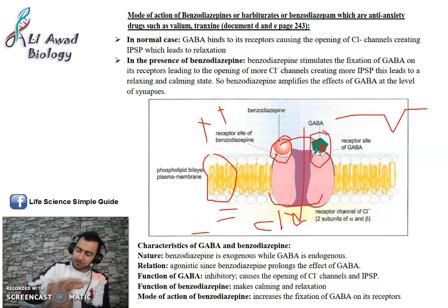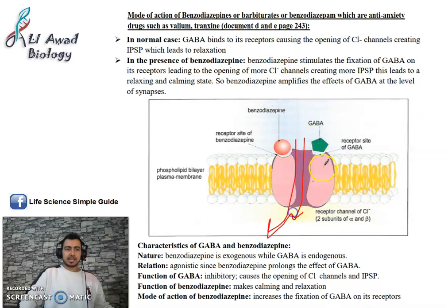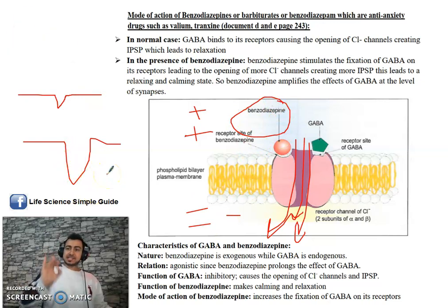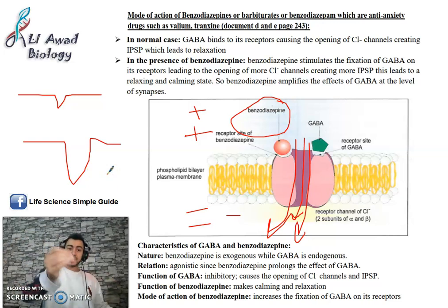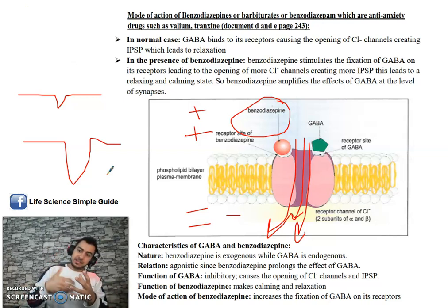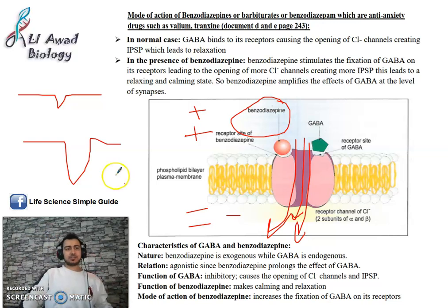Benzodiazepine fixes GABA on its receptors for a longer period of time. So more Cl⁻ will enter, and more hyperpolarization is obtained than normal. Compared to GABA alone, with benzodiazepine the amplitude of hyperpolarization increases — thus it increases the inhibitory effect of GABA by increasing its fixation to the receptors.